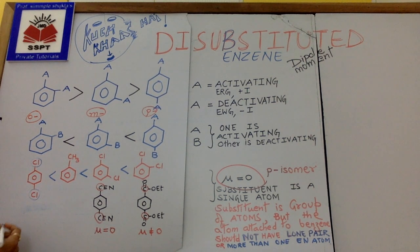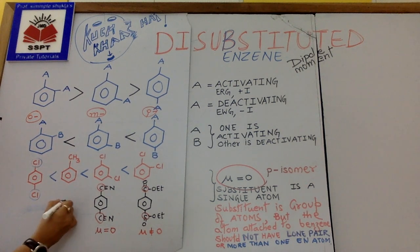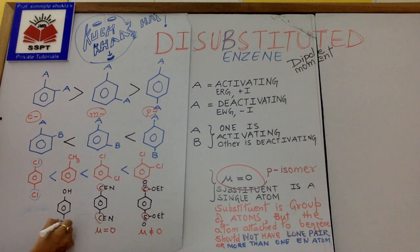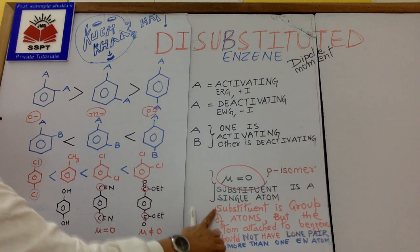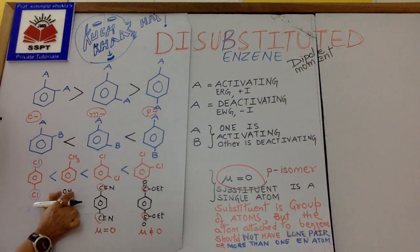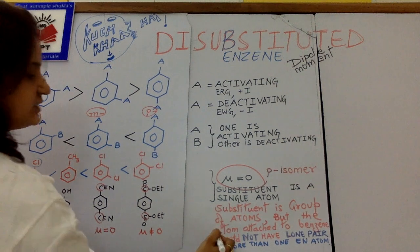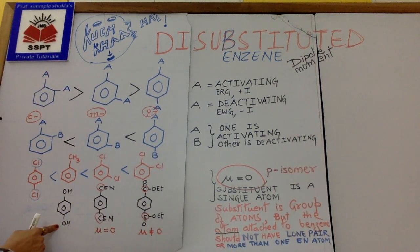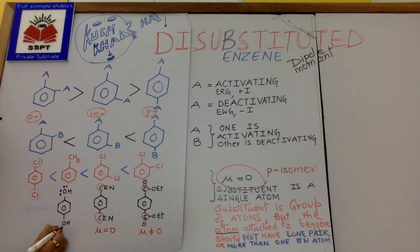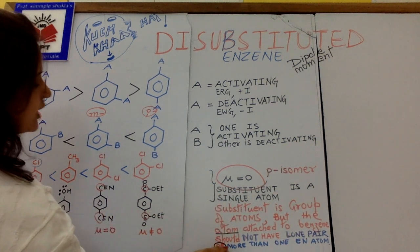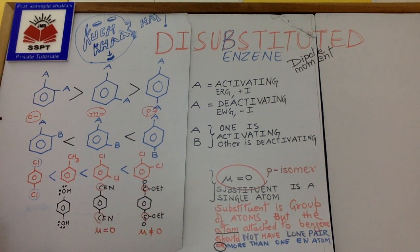Let us consider another example — the OH group. This substituent is a group of atoms: oxygen and hydrogen. The atom attached to benzene is oxygen. Does oxygen have lone pairs? Yes, two lone pairs. So even though oxygen is not attached to another electronegative atom, the condition is violated because of the lone pairs. Therefore, its dipole moment is not zero.